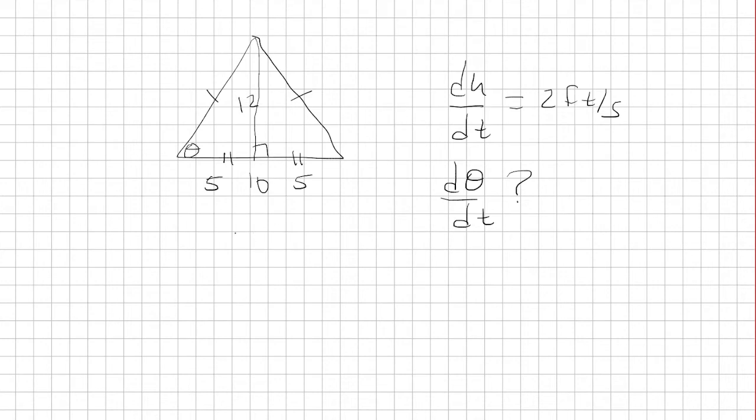So if we just focus on the first right triangle here on the left, we have 5 and 12, and this is theta. We can actually find what theta is, because tangent of theta is opposite over adjacent, which means theta is inverse tangent of 12 over 5.